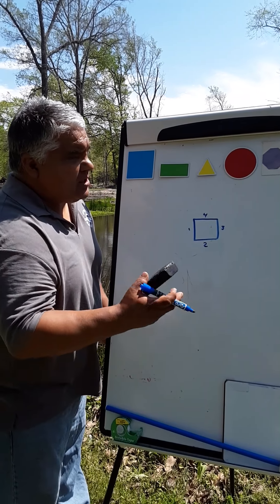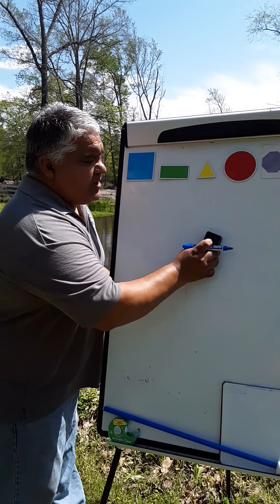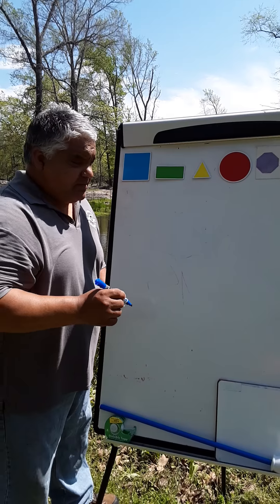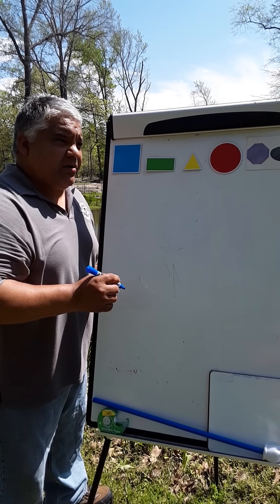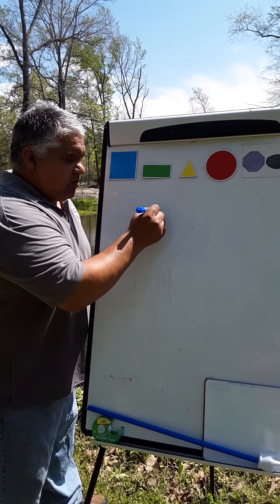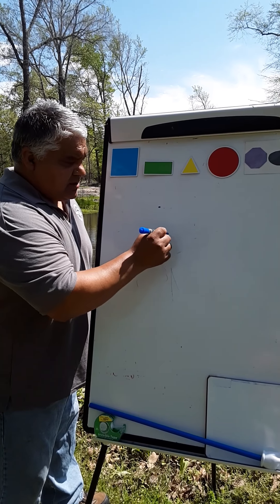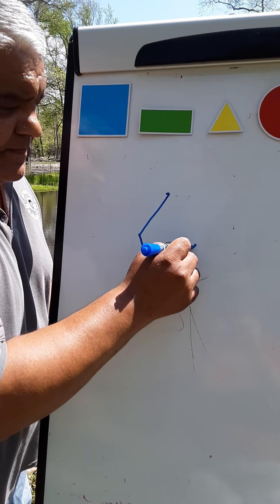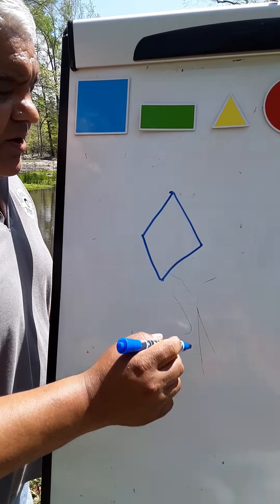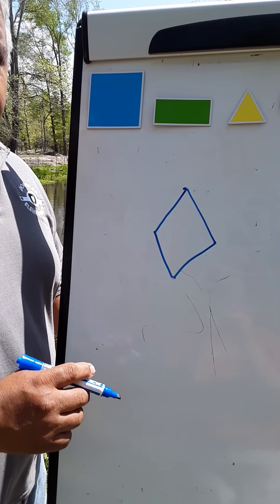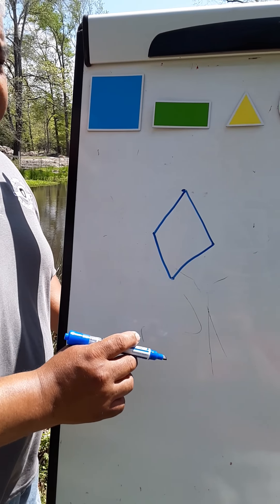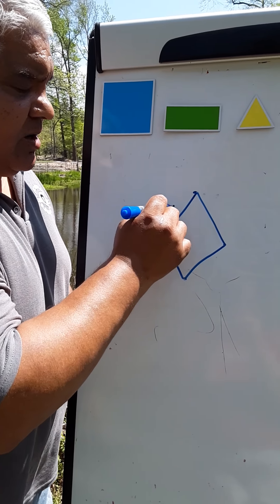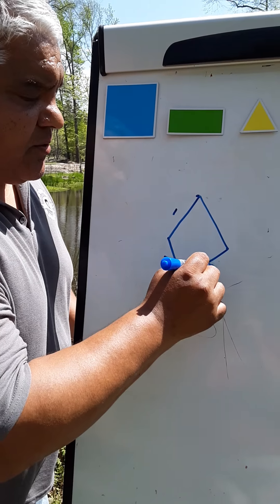Now the next ones we don't really use that much, but we need to cover them. Some people call it a diamond, but the mathematical term is a rhombus. A rhombus has four sides and four vertices. They are not the same length, so it can't be a square. It's like two triangles put together side by side. This is called a rhombus: one, two, three, four.